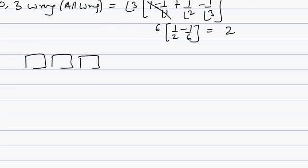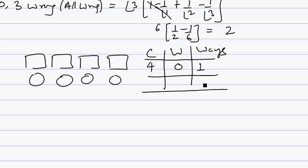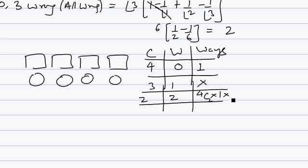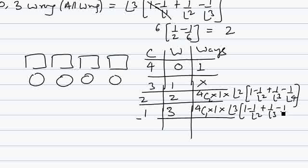Now for an example of 4 letters and 4 envelopes: all 4 correct (0 wrong) — 1 way. 3 correct, 1 wrong — not possible, as we saw. 2 correct, 2 wrong — select 2 that go correct (4C2), place them correctly in 1 way, and apply derangement for the remaining 2 wrong. 1 correct, 3 wrong — select 1 that goes correct (4C1), place it correctly, and apply derangement for the remaining 3 wrong. 0 correct, all wrong — straight derangement: 4 factorial times (1 minus 1 by 1 factorial plus 1 by 2 factorial minus 1 by 3 factorial plus 1 by 4 factorial).